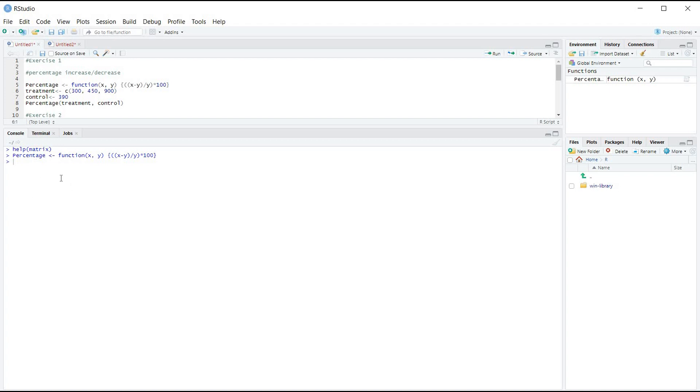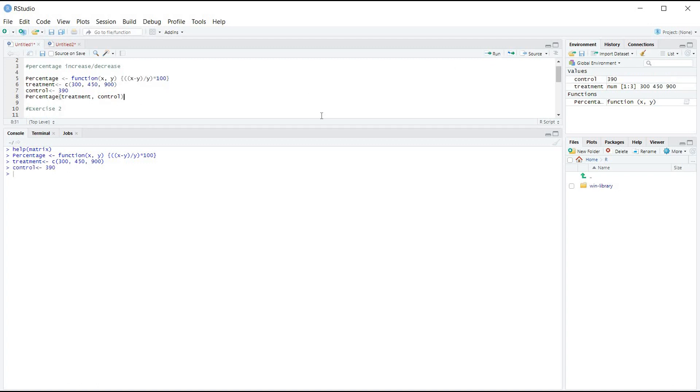So we can run it here. And now we have this function stored in R. Now let's assign our vector to treatment. And let's assign our numeric number to control.